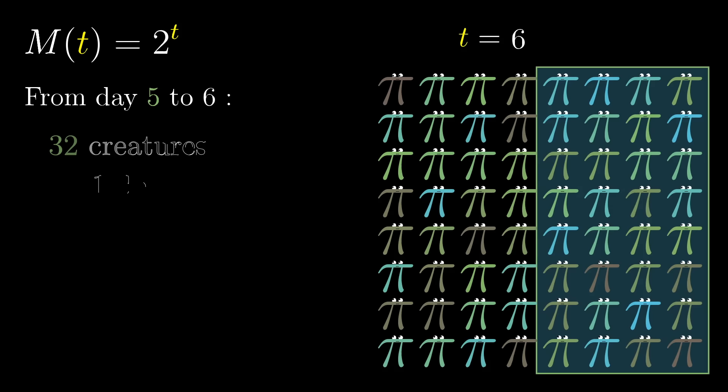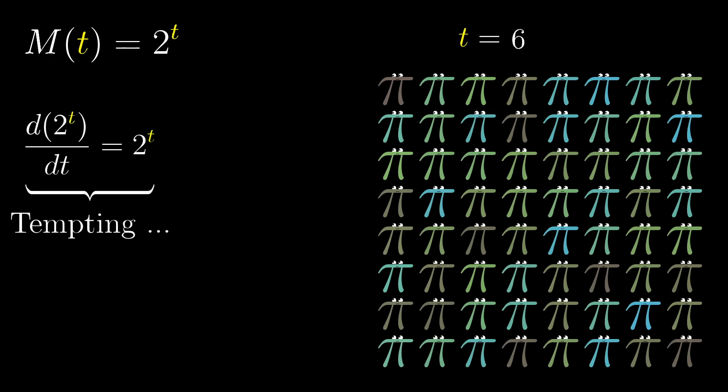So it might be tempting to say that this means the derivative of 2 to the t equals itself. That the rate of change of this function at a given time t is equal to the value of that function. And this is definitely in the right direction, but it's not quite correct. What we're doing here is making comparisons over a full day, considering the difference between 2 to the t plus 1 and 2 to the t.